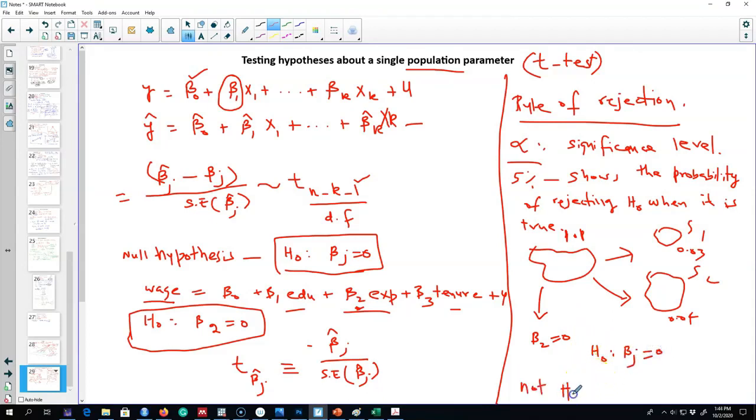That's why when we write our hypothesis, we write that beta j is 0, not that beta j hat is 0. We already know that it is 0.03. It would be foolish to write down 0.03 equals 0. We are making our hypothesis about a population parameter, not our estimates from these samples.